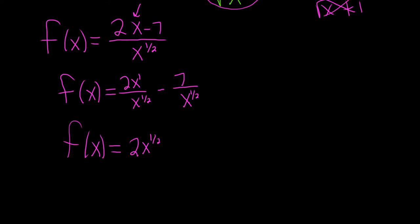And then here we can bring this one upstairs. So minus 7x to the negative 1/2. When you bring the x upstairs, the exponent becomes negative. Now we're ready to take the derivative.